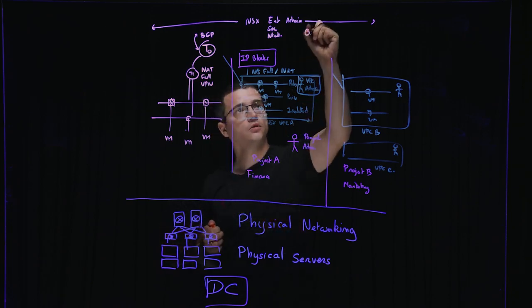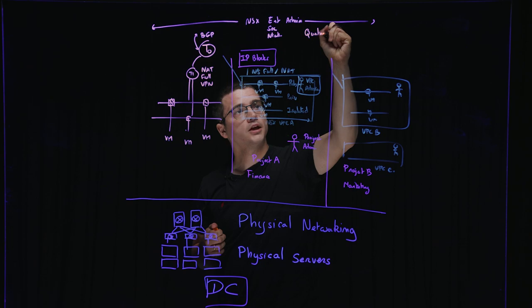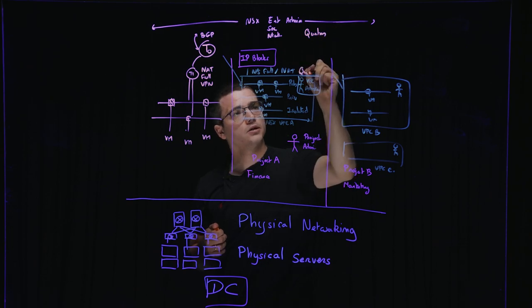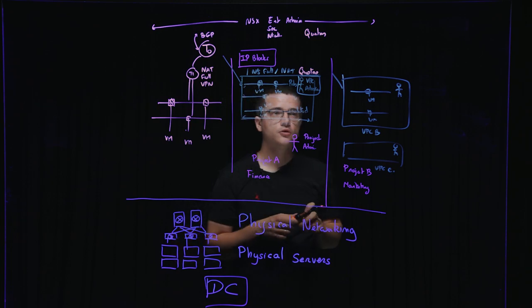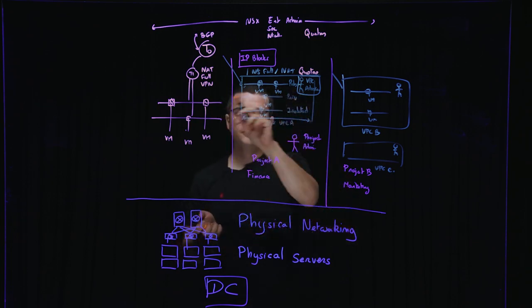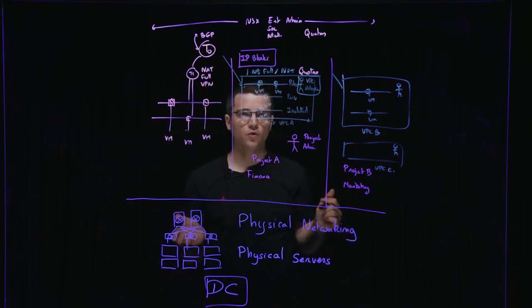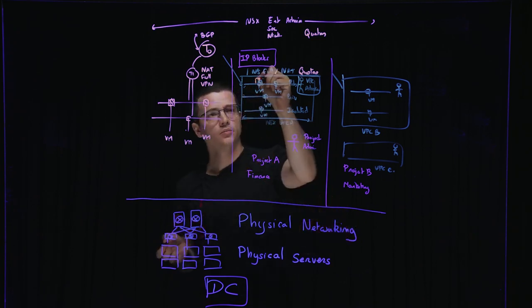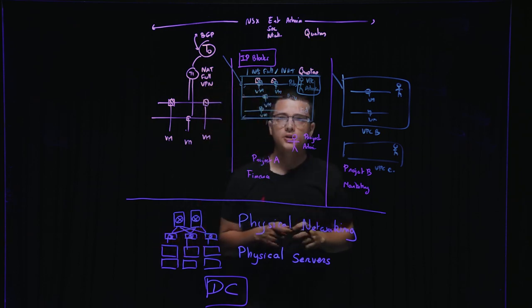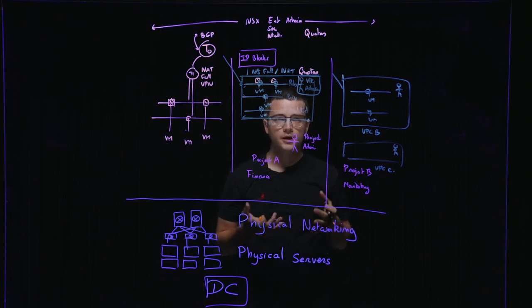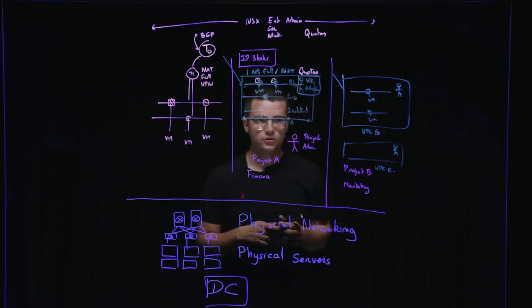He was the one who defined the different IP blocks going to the different projects and used for the VPCs. He can also allocate quotas at project level or at VPC level, quotas on what people can use, how many objects they can take of the platform. And of course, he can define platform-wide, so on all the NSX system firewall rules, which will be on top of the rules of the VPC.